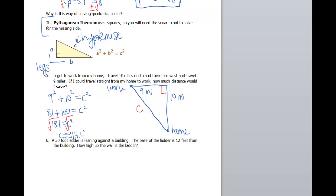So I'll say this is about 13.45. I haven't quite answered the question yet though, because it says, how much distance would I save? So typically, I would go 10 miles north, 9 miles west. So that's a grand total of 19 miles.